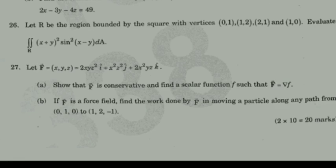Let vector F(x,y,z) = 2xyz²·i + x²z²·j + 2x²yz·k. First, show that F is conservative and find a scalar potential function f such that F = ∇f. Then, find the work done by F in moving a particle along any path from (0,1,0) to (1,2,1).